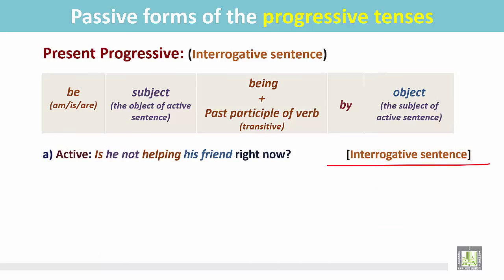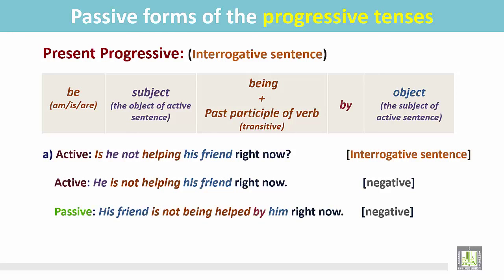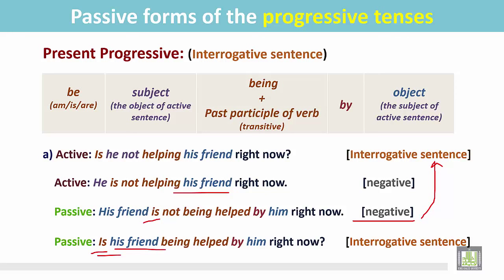Another example — an interrogative sentence in the negative form. 'Is he not helping his friend right now?' Change it into a statement: 'He is not helping his friend right now.' The passive form: 'His friend is not being helped by him right now.' The object becomes the subject; since it is singular, we use 'is'. To make it negative, add 'not'. For the progressive tense, use 'being', then the past participle of the transitive verb, then the preposition 'by', and the subject becomes the object. To make it interrogative, place the be verb before the subject: 'Is his friend being helped by him right now?'